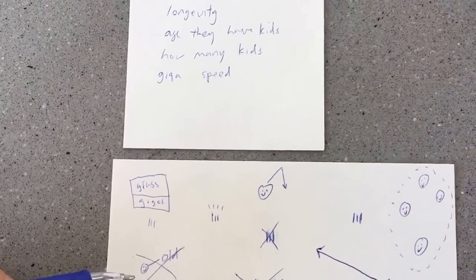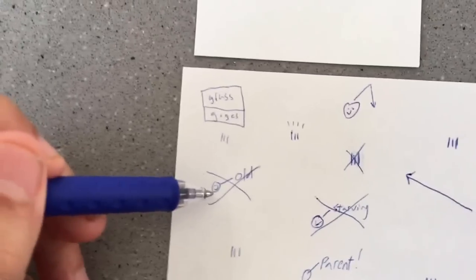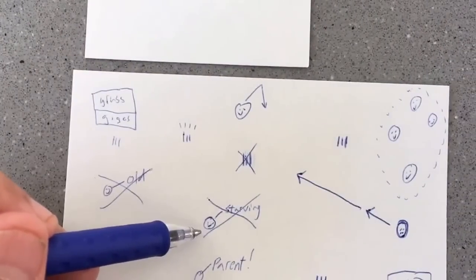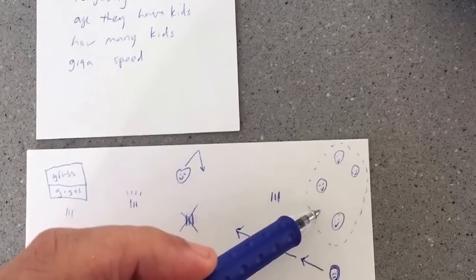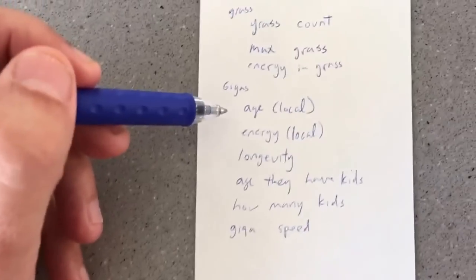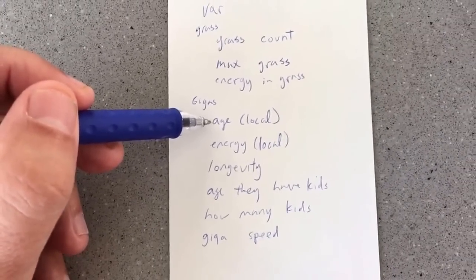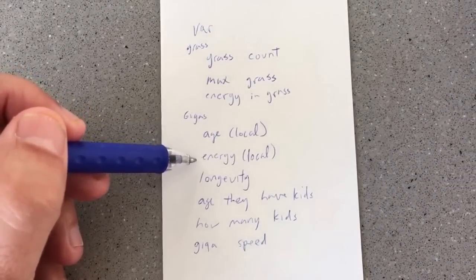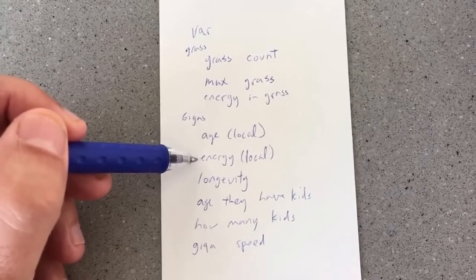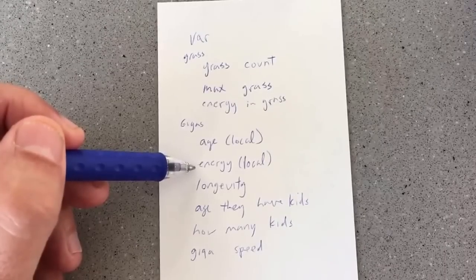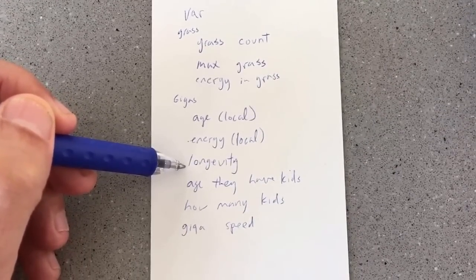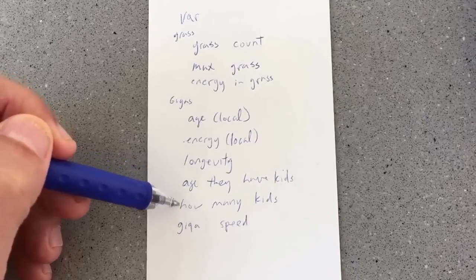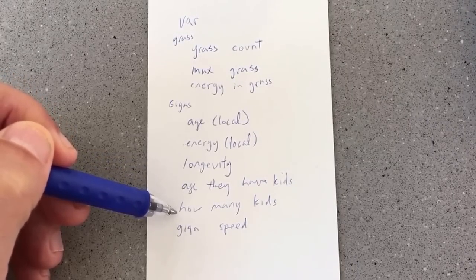And my gigas can die too. They can die of old age. They can die of starvation. And they can become parents. And if they become parents, they will have offspring, a certain number of offspring. So I have the age of my gigas, and that's a local variable. Every giga that's created is going to have their own age. The energy that they have currently in storage. And when they're born, they better have a default amount of energy. They can't be at zero, or they'll be instantly dead, right? Longevity is going to be the same for all of them. Age that they have kids can be the same for all of them. How many kids they have is going to be the same for all of them. And how quickly they move. So this is basically my program.